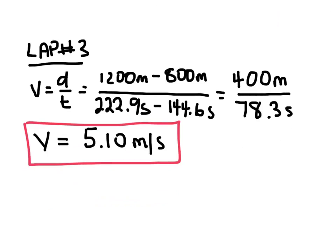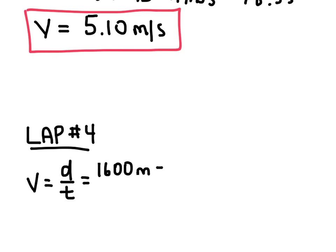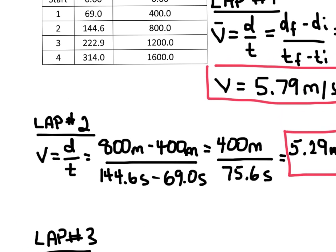And the fourth lap, so lap number 4, speed equals distance over time. And 1,600 meters minus 1,200 meters. You can see where I got those numbers here by looking back at the chart. There's our 1,600 minus the 1,200.